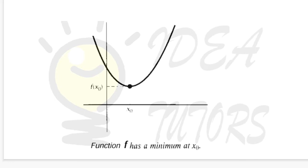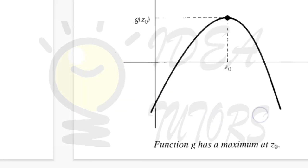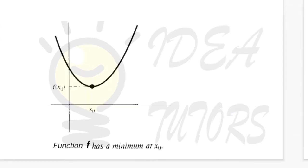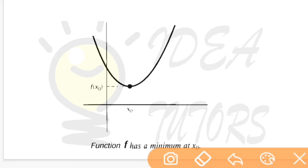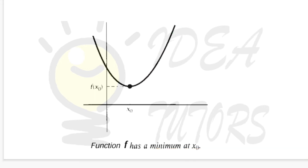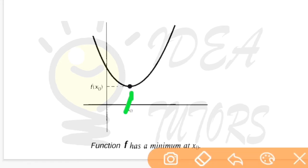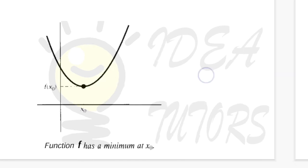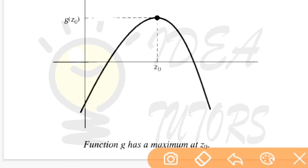Any curve of a function can have points which are maximum or minimum. For a function, the minimum is that point from where it changes from decreasing to increasing. As you can see in the curve, if at x-naught I get that point where the function changes from decreasing to increasing, then x-naught is the minimum. Similarly, the maximum point is where a function changes from increasing to decreasing.